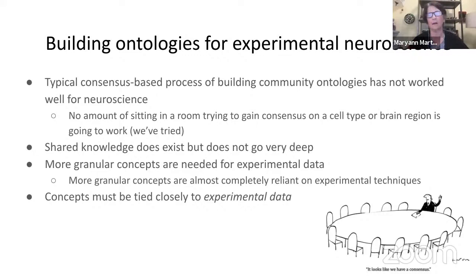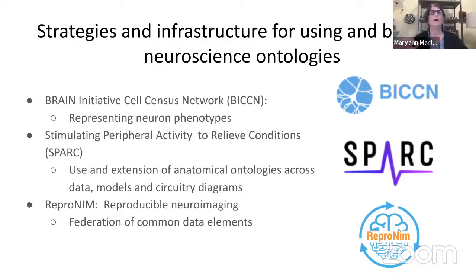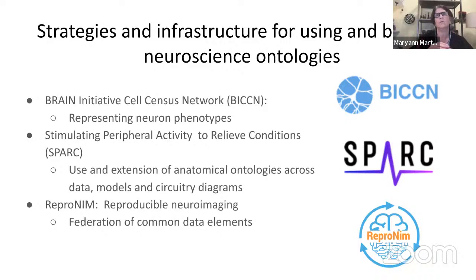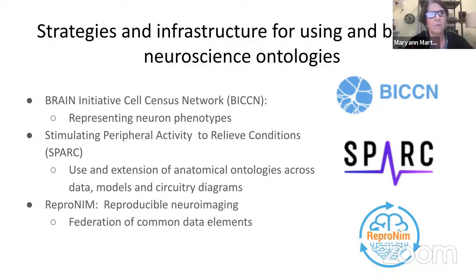In the next part of the talk, I'm going to go through the strategies and infrastructures we've developed for using and building neuroscience ontologies, and how they are being applied across three projects. The first is the BRAIN Initiative Cell Census Network — groups of neuroscientists using cutting-edge techniques to determine how many cell types there are. Second is the SPARC project, which is trying to map the autonomic nervous system using anatomical ontologies. And if I have time, I'll get into the Repronim project on reproducible neuroimaging and federated data elements.